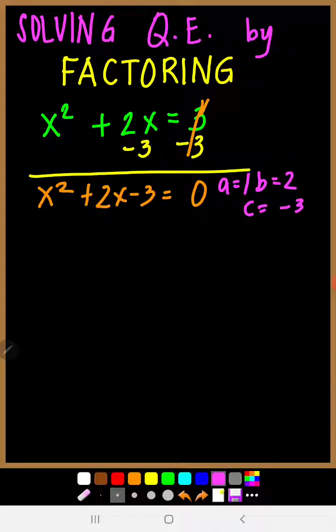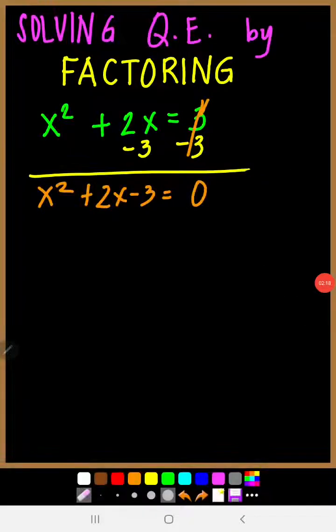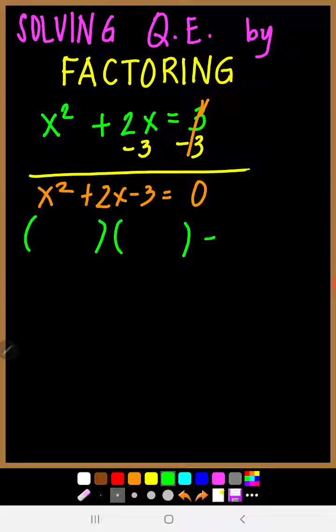Now you have to think of two numbers that when multiplied give a product of negative 3, and when added give a sum of 2, which is b. Those two numbers are 3 and negative 1, because 3 times negative 1 is negative 3, and 3 minus 1 equals 2.